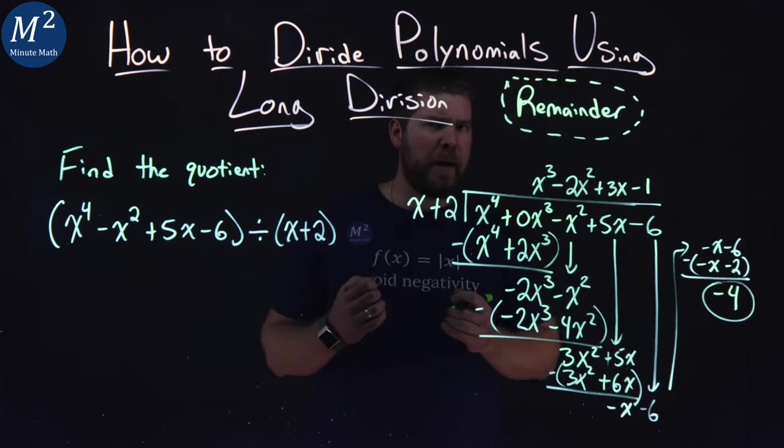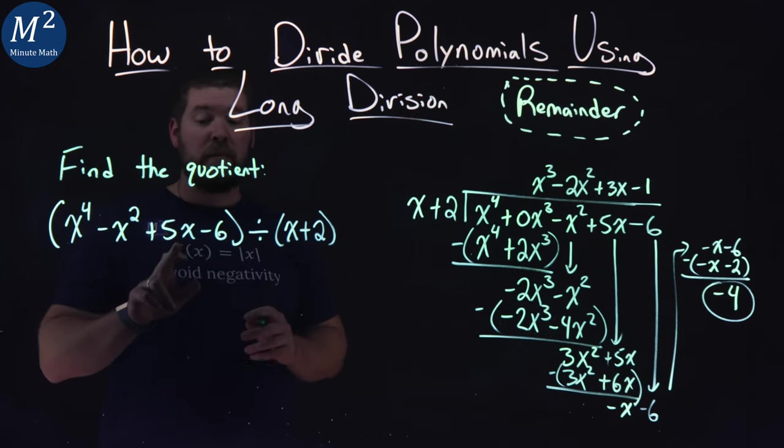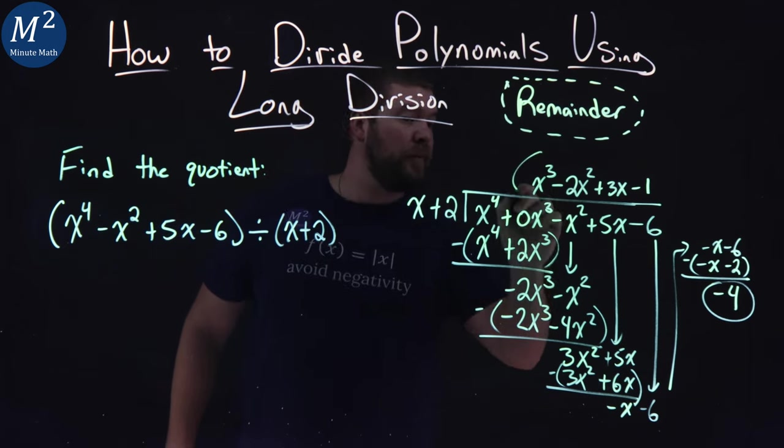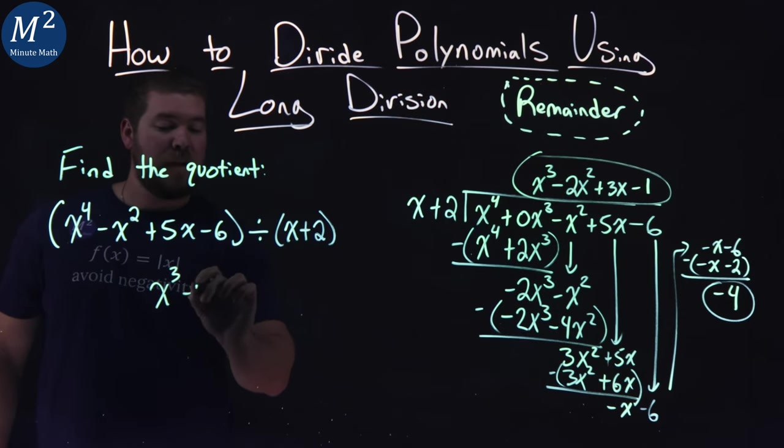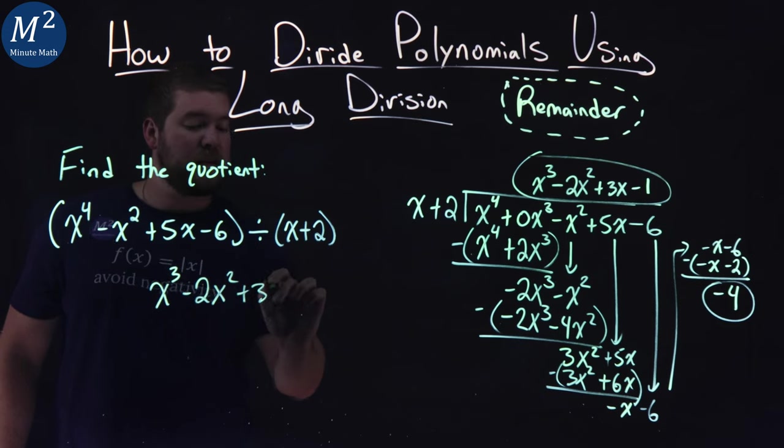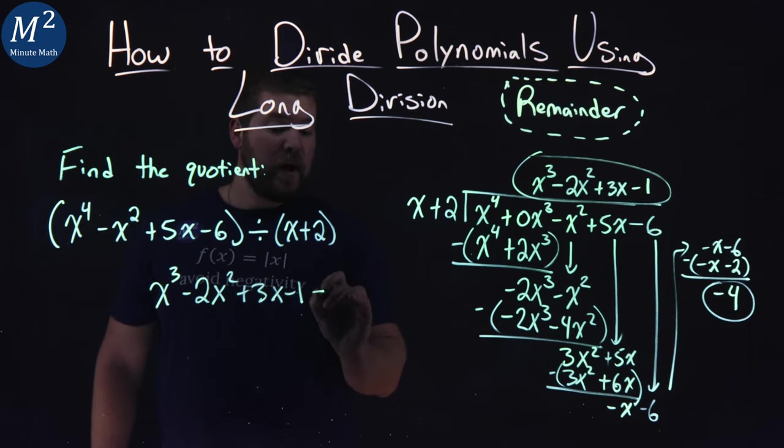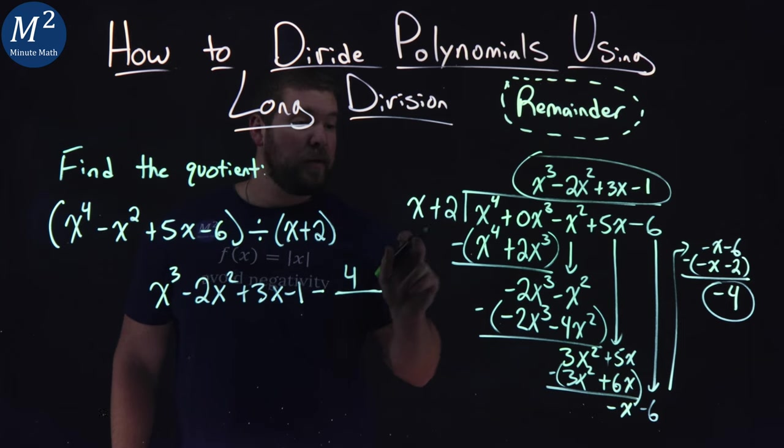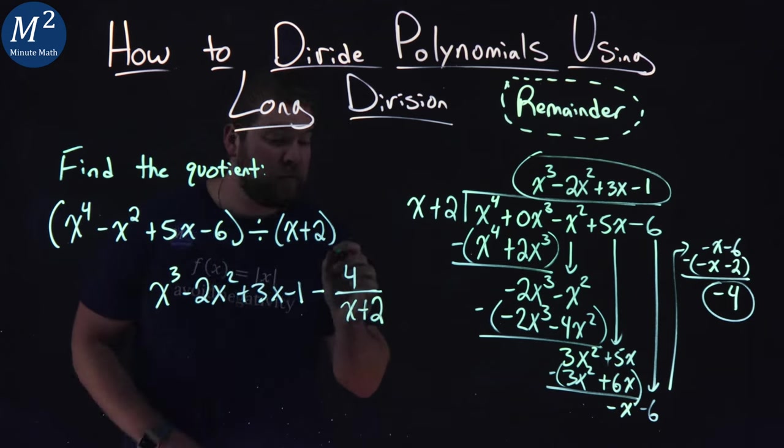Now what do we do with that? Our answer to this question, x to the fourth minus x squared plus 5x minus 6 divided by x plus 2, is the first part that we see up here: x to the third minus 2x squared plus 3x minus 1. Then we subtract—we put a negative 4 up top, and we're going to have in the denominator x plus 2. And that's our remainder.